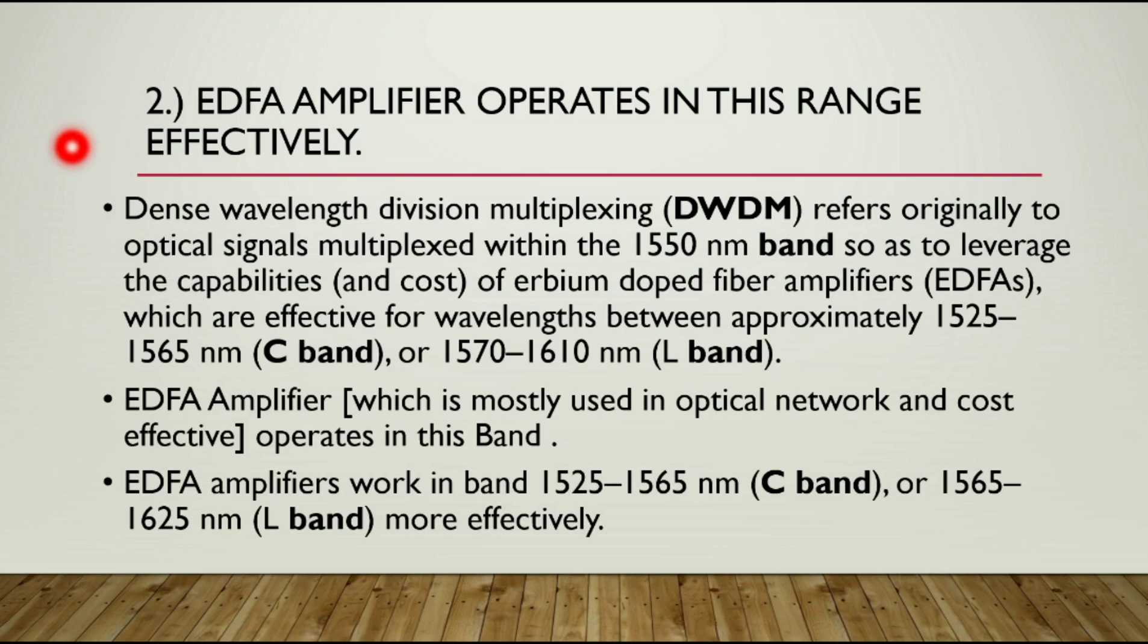The second main reason is the EDF amplifier operates in this range effectively. Dense wavelength division multiplexing refers originally to optical signal multiplex within the 1550 nanometer band so as to leverage the capability of the erbium doped fiber amplifier which are effective for wavelengths between approximately 1525 to 1565 nanometers C band or 1572 to 1610 nanometers L band. EDF amplifier which is mostly used in optical networks and is very cost effective operates in this band very effectively.